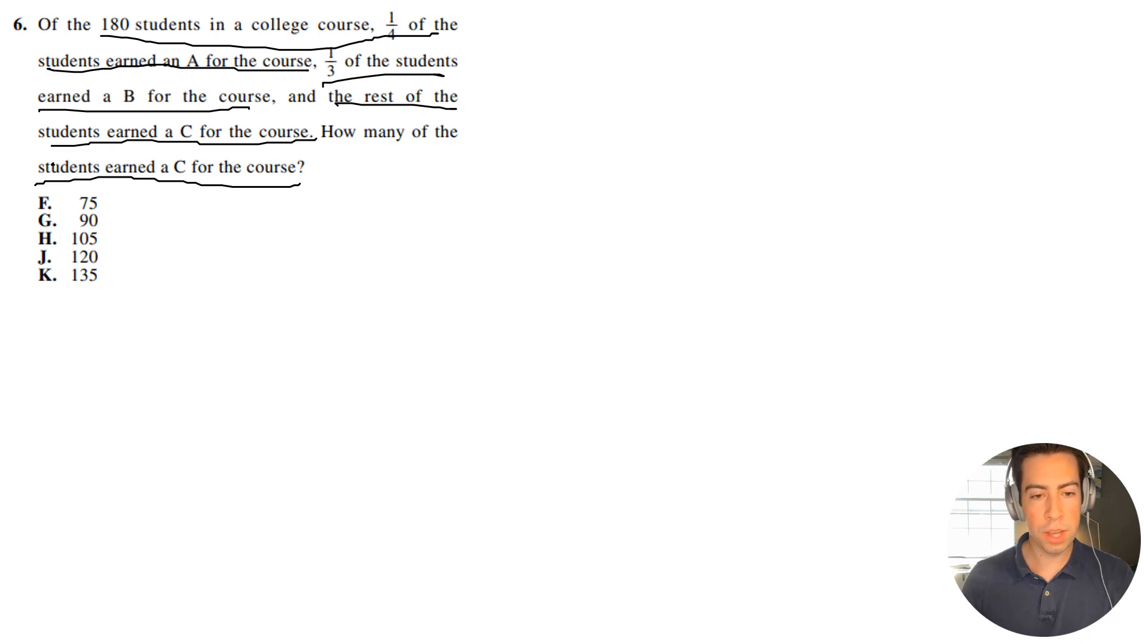The trick here is to subtract off all the students that earned an A and a B, and that's going to leave you with your C value. So I'm going to do 180 minus 180 divided by 4 minus 180 divided by 3.